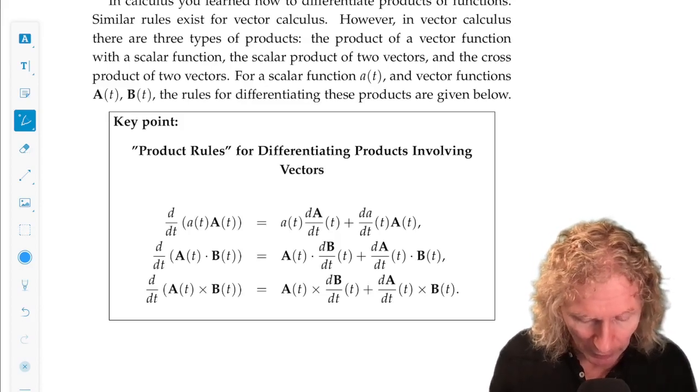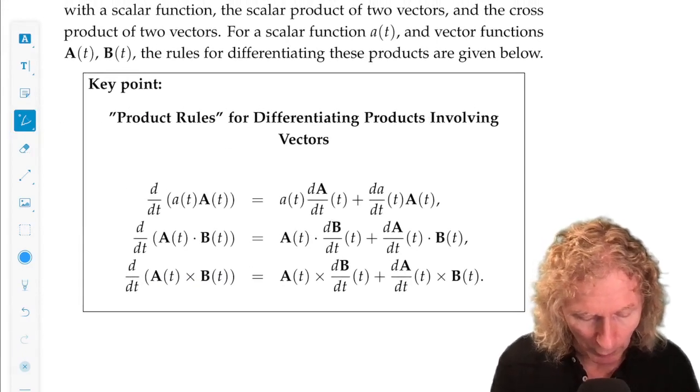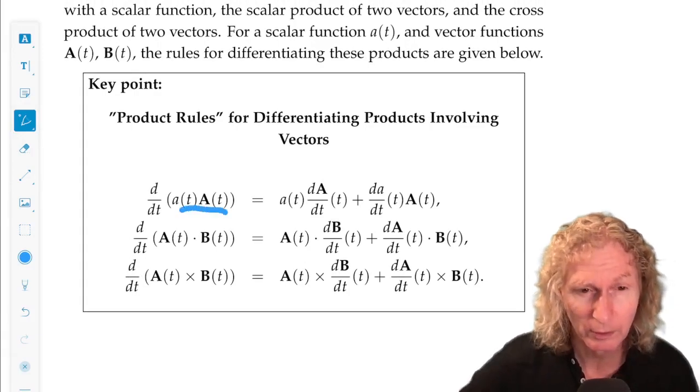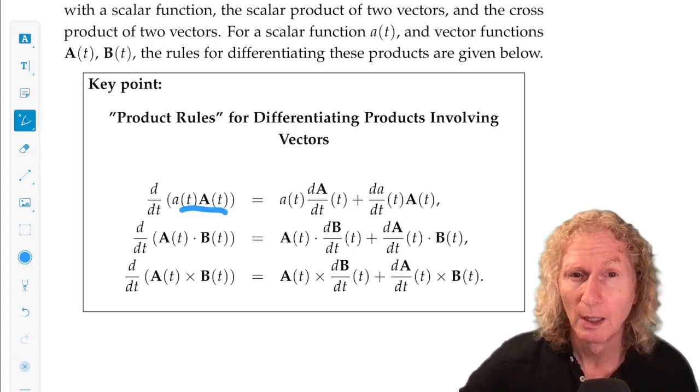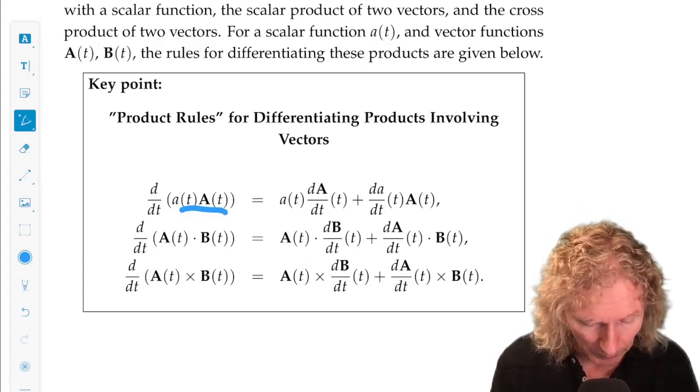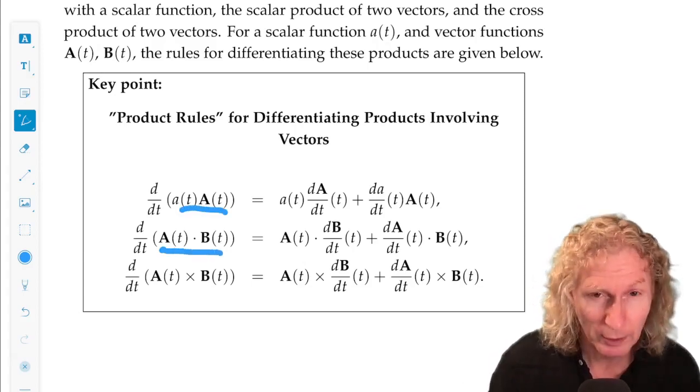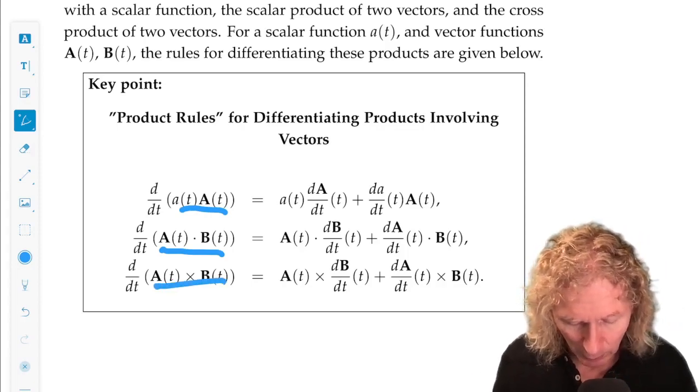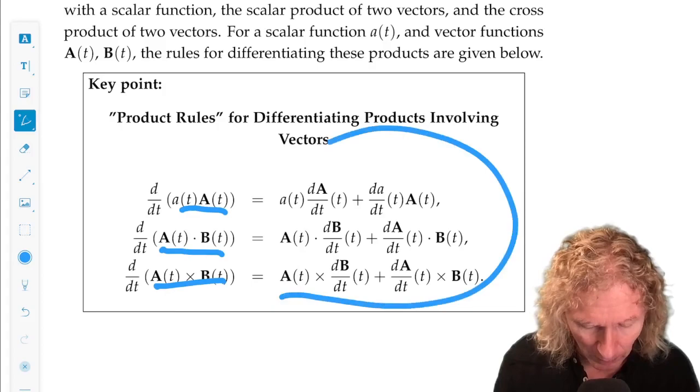But we have these product rules for differentiating products involving vectors. The product of a scalar times a vector. Scalar can depend upon t, and the vector depends on t. Dot product of two vectors, cross product of two vectors. And the result is exactly what you would expect.